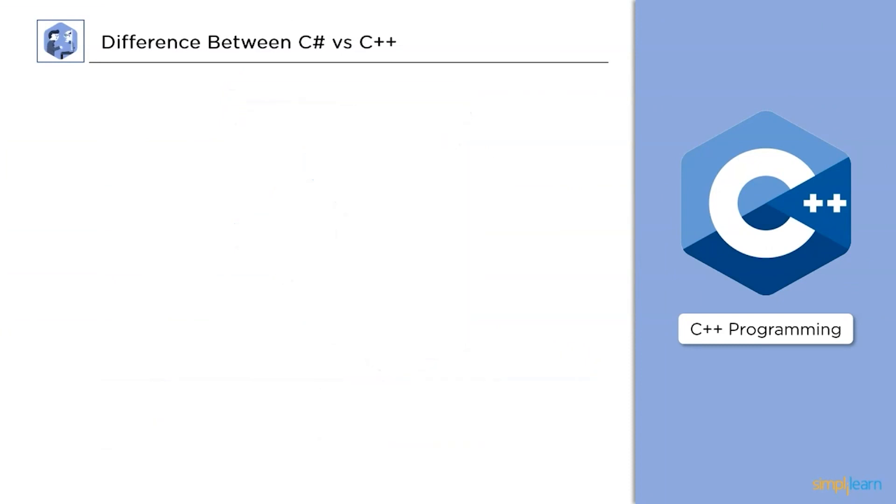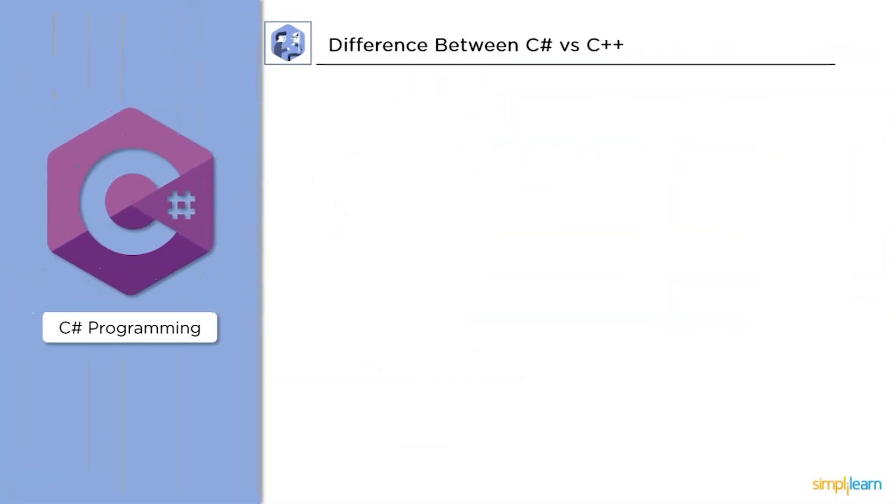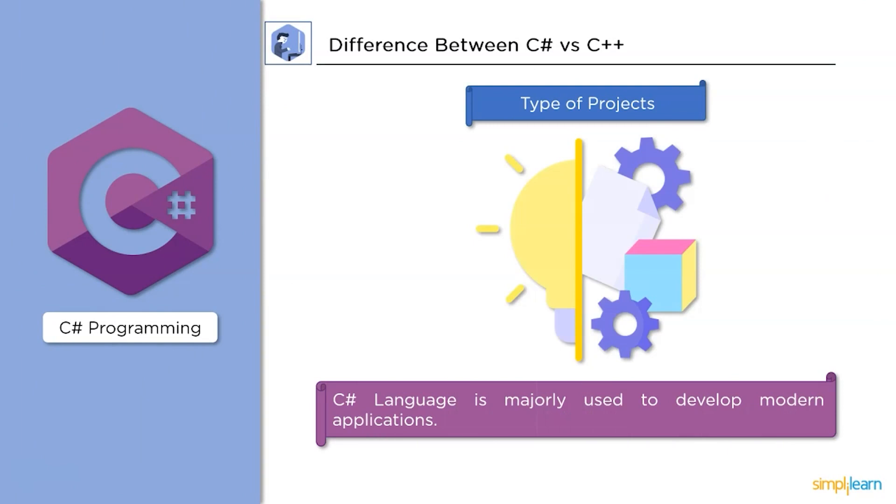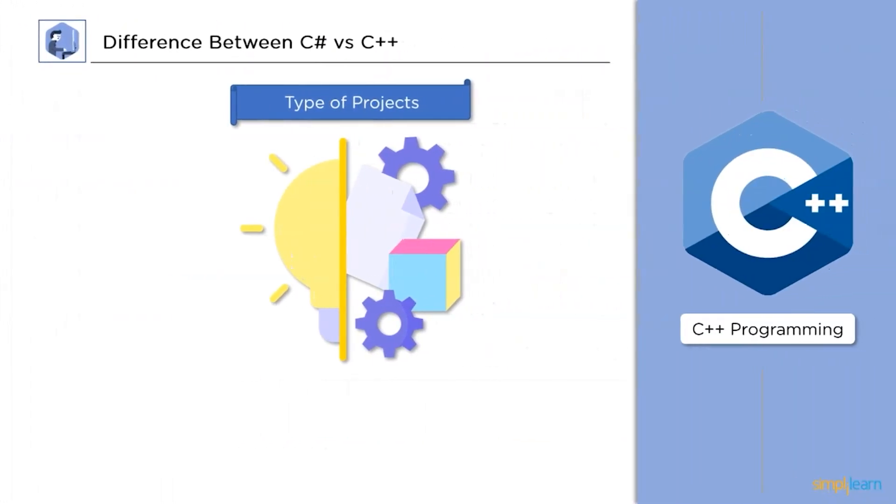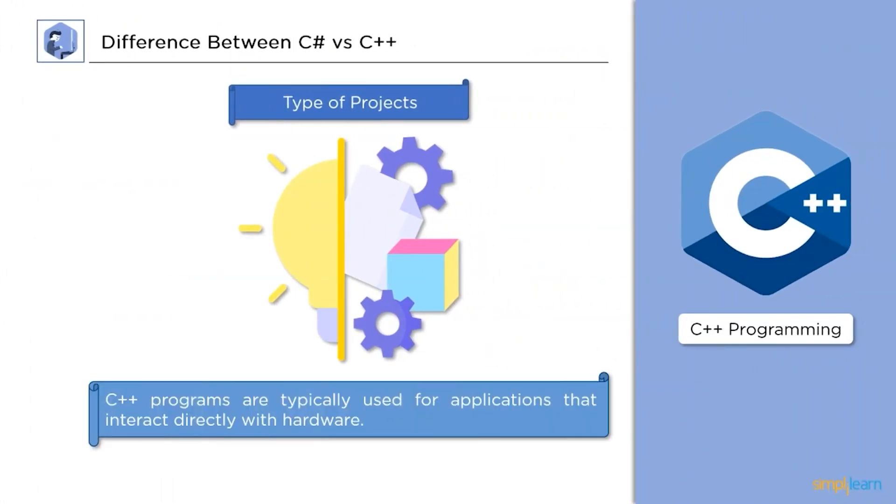Next, let's discuss types of projects we can do with these languages. C Sharp language is majorly used to develop modern applications like Twitter bots, ATMs, and driving simulators. Whereas, the C++ programs are typically used for applications that interact directly with the hardware or require higher performance than other languages can provide.